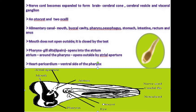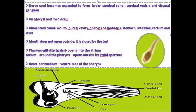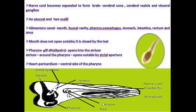The cerebral vesicle encloses an otocyst and two ocelli. The alimentary canal has the mouth, buccal chamber, pharynx, esophagus, the stomach, and the intestine and anus. The mouth does not open outside — it is covered by a transparent test. The pharynx bears six pairs of gill slits and opens into the atrium, which is the cavity surrounding the pharynx. It opens outside via the atrial aperture. The heart is enclosed in the pericardium and is located on the ventral side of the pharynx.